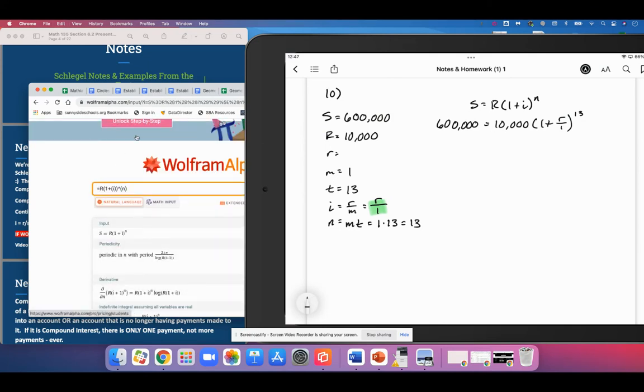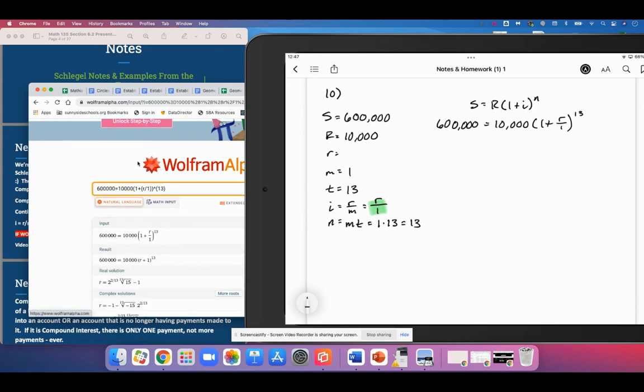And we have the future value, the future value is 600,000. And the initial investment was $10,000. I is R over 1. And N is, I guess you could put in R as well, that would be the same thing. But I'll leave it like that, just for clarity purposes.